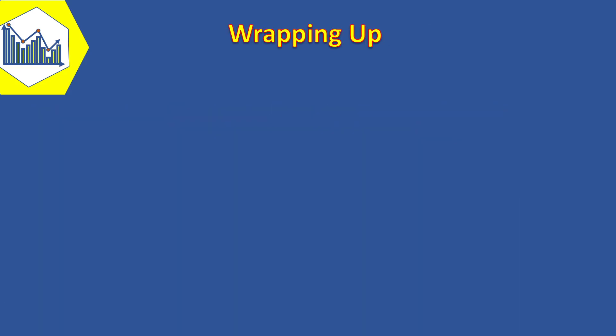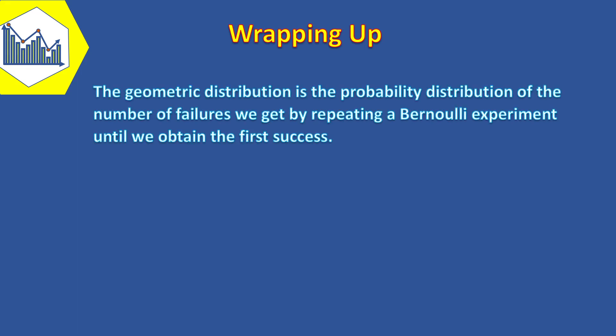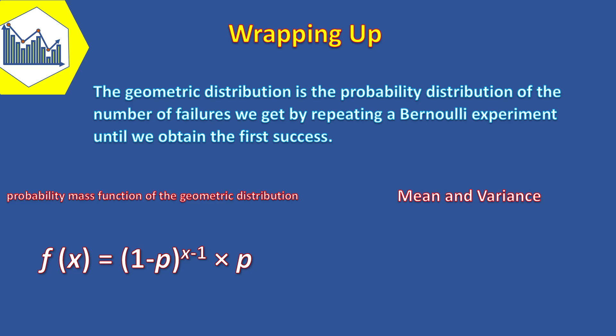Now it's time to wrap up the video by reviewing what we have learned so far. First, we saw that the geometric distribution is the probability distribution of the number of failures we get by repeating a Bernoulli experiment until we obtain the first success. Then, we learned that the geometric probability mass function is (1 minus p) to the power of (x minus 1) times p. Then, we saw its mean and variance which were equal to the following formulas.